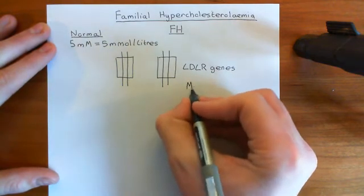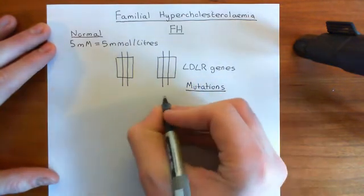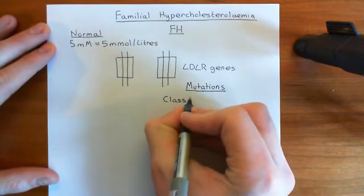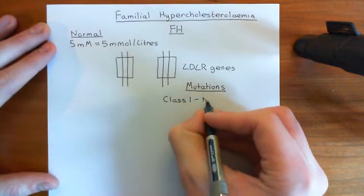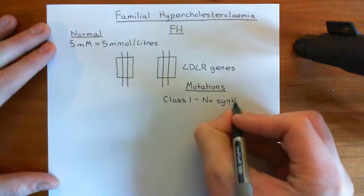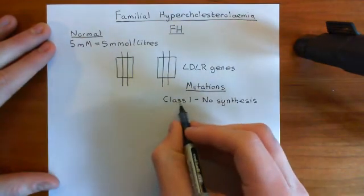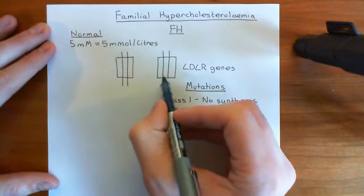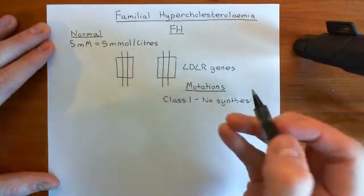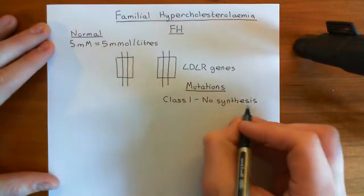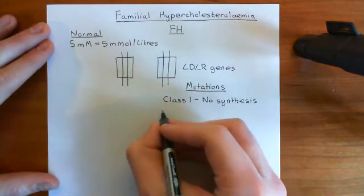The mutations that you can get in LDL receptors are classified into five categories. Class 1 mutations in the LDL receptor result in absolutely no synthesis of that LDL receptor — there is no detectable synthesis. A class 1 mutation in the LDL receptor gene will result in the complete termination of any synthesis of the protein for that gene, so you get no synthesis at all of the LDL receptor.